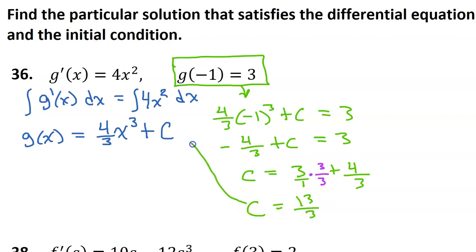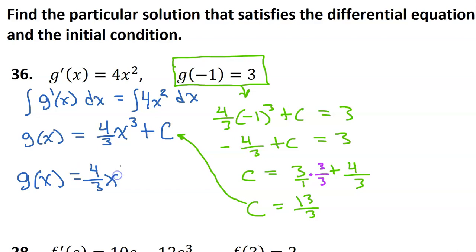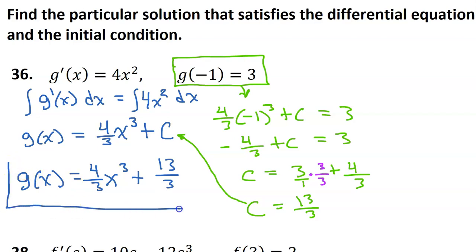So I can substitute that back in, and that will give me the final answer. So g of x will equal 4 over 3 times x to the third power plus 13 over 3. So we solved the differential equation.